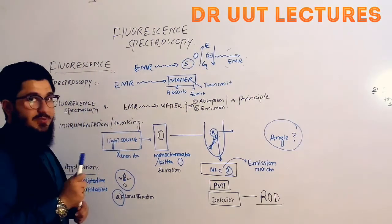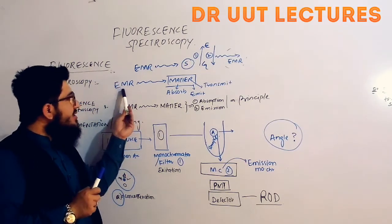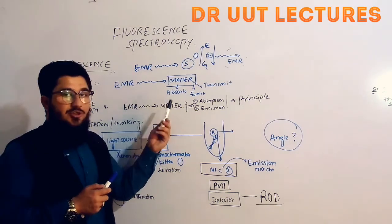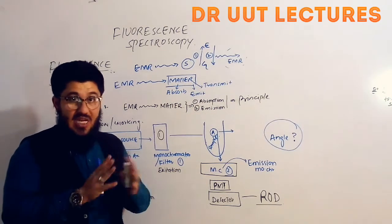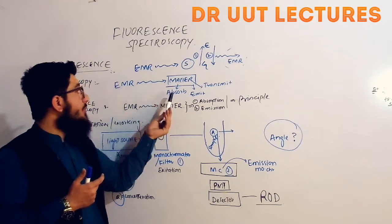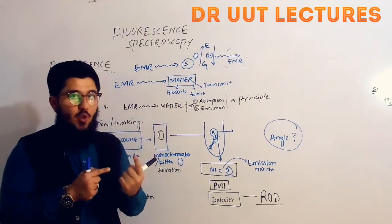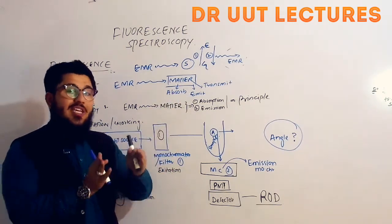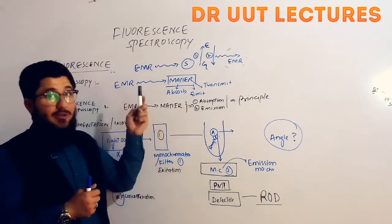Now what is spectroscopy? Spectroscopy is actually the interaction of electromagnetic radiations with matter, and this interaction is of different types. These interactions may be in the form of absorption, emission, or transmission, due to which we have different types of spectroscopy. If atoms are absorbing, we call it atomic absorption spectroscopy, and if they are emitting, we call it atomic emission spectroscopy.